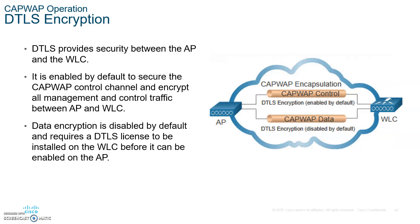The DTLS provides security for the AP and the WLC. It enables, by default, a secured CAPWAP control channel and encrypts all management and control traffic between the AP and the WLC. Data encryption is disabled and requires a DTLS license to be installed on the WLC before it can be enabled.